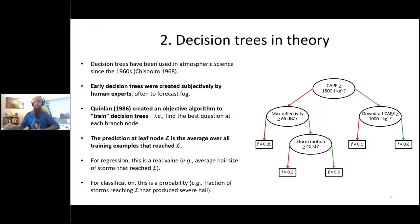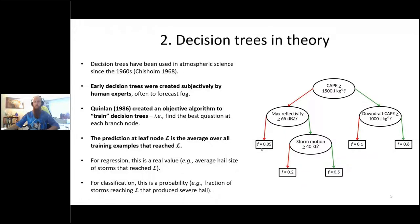Training a decision tree means finding the best question at each branch node — the best combination of predictor variable and threshold. If you have 41 predictor variables, the algorithm loops over all 41 and tries roughly 100 thresholds on each, trying 4,100 combinations, then finds the one that maximizes information gain. For a regression problem, information gain is maximized by minimizing mean squared error between predicted and actual values.